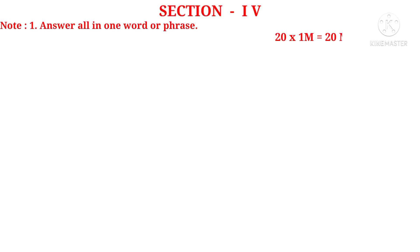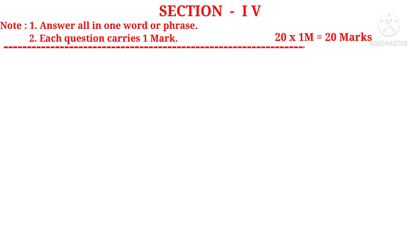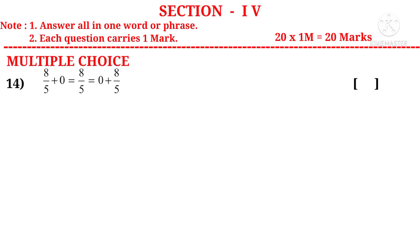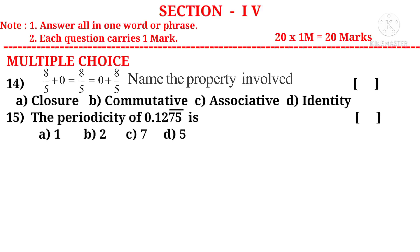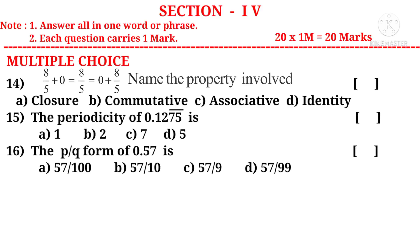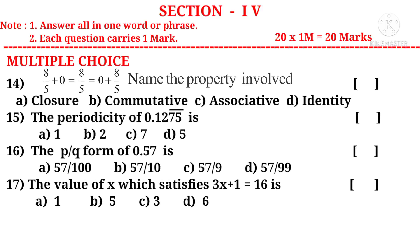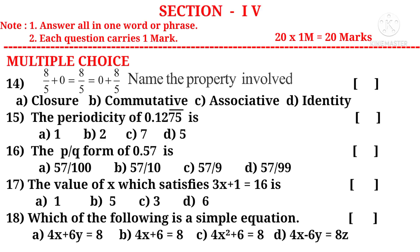Now let us observe Section 4. Note: answer all in one word or phrase, each question carries 1 mark, there are 20 bits — 20 into 1 is 20 marks. Multiple choice: fourteenth question from Chapter 1 — 8 by 5 plus 0 equals 8 by 5 equals 0 plus 8 by 5, name the property involved, options A, B, C, D. Fifteenth question: the periodicity of 0.1275 bar is — also from Chapter 1, Rational Numbers.